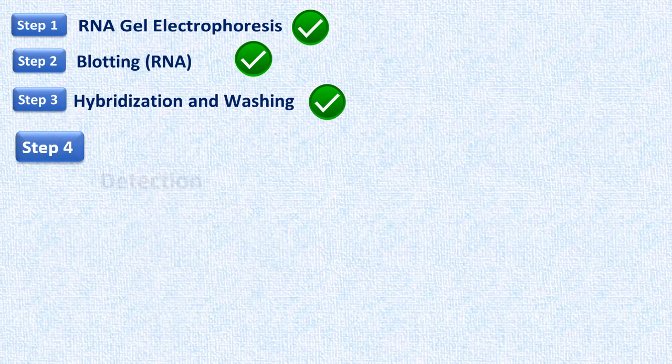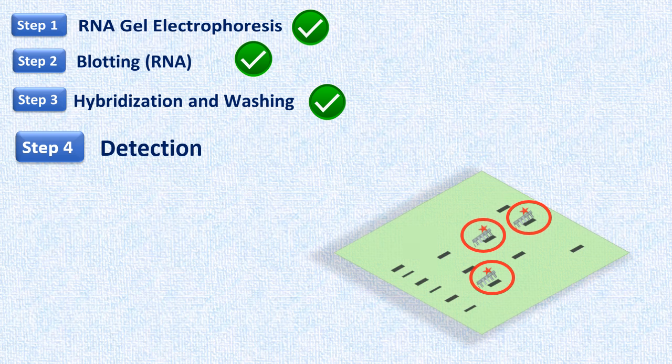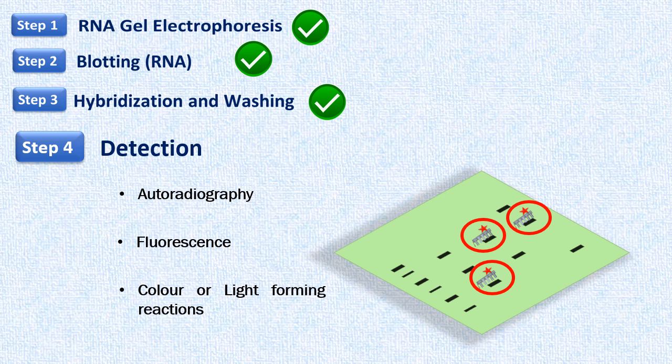In the fourth and final step, detection is done. Again, detection and visualization method depends on the type of labeled molecule we used for hybridization step.